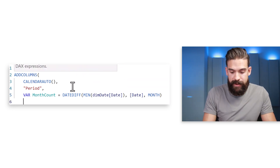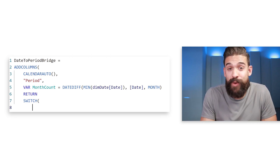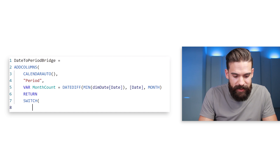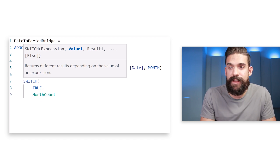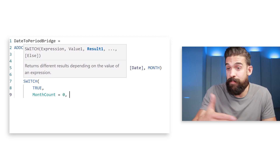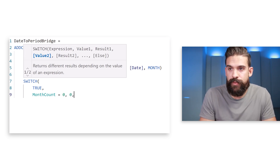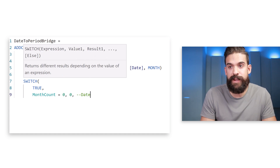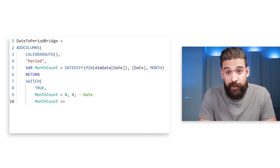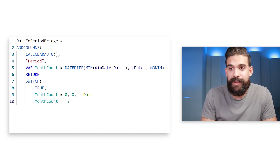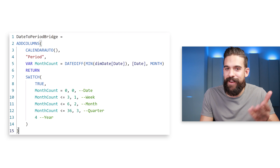Since we have a variable we need a RETURN statement. Then we use the SWITCH function to define which period breakdown we want depending on that month count: SWITCH(TRUE, month_count = 0 → 0 for date breakdown, month_count <= 3 → 1 for week breakdown, and so on. You can choose where you want the breaking points.